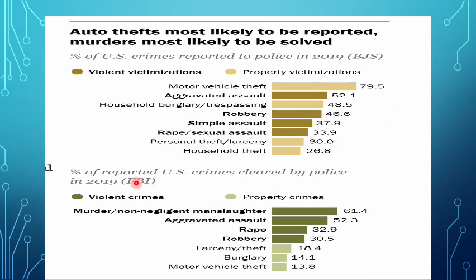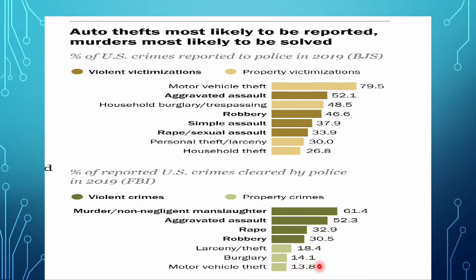The bottom of the slide shows clearance rates — crimes solved by police. Murder and manslaughter have the highest clearance rates, while burglary and motor vehicle theft have very low rates. Murder receives significant police attention and yields substantial forensic evidence. Other crimes get less attention and are harder to solve due to insufficient evidence. Note that murder doesn't appear in victimization reporting data because victims of murder cannot self-report.